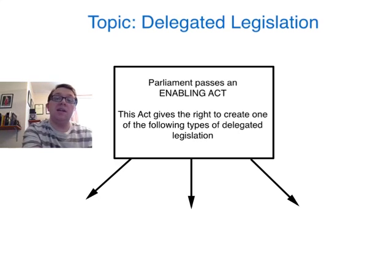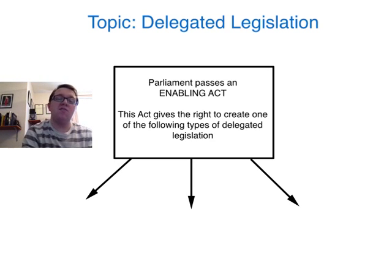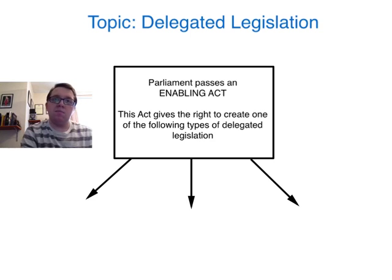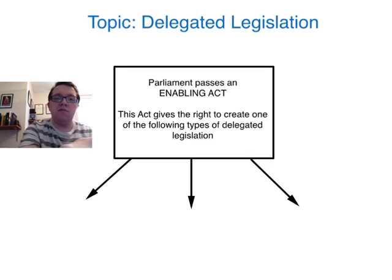When we're talking about delegated legislation, what we're essentially talking about is Parliament transferring some of its law-making powers to another. Now it does this for two reasons as we've seen in the previous video. The first is a lack of time to deal with all legislative matters. And secondly, Parliament lacking some detailed knowledge about a specific law that would best be served by another person who actually does have that knowledge.